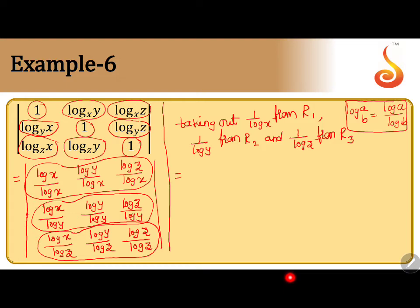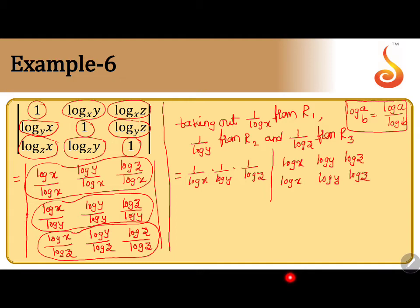Taking out 1 by log x into 1 by log y into 1 by log z. After taking 1 by log x out from the first row, we still have log x, log y, log z. After taking 1 by log y from the second row, we still have log x, log y, log z. After taking 1 by log z out from the third row, we still have log x, log y, log z. This equals 1 by (log x · log y · log z) times the resulting determinant.